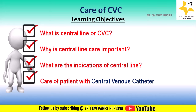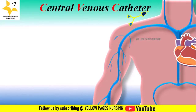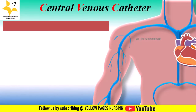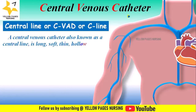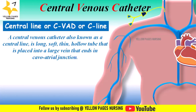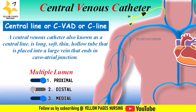What is a central line or CVAD — that is, central venous access device or C-line? A central venous catheter, also known as a central line, is a long, soft, thin, hollow tube that is placed into a large vein that ends in the cavo-atrial junction. A central line catheter comes with multiple lumens named as proximal, distal, and medial.